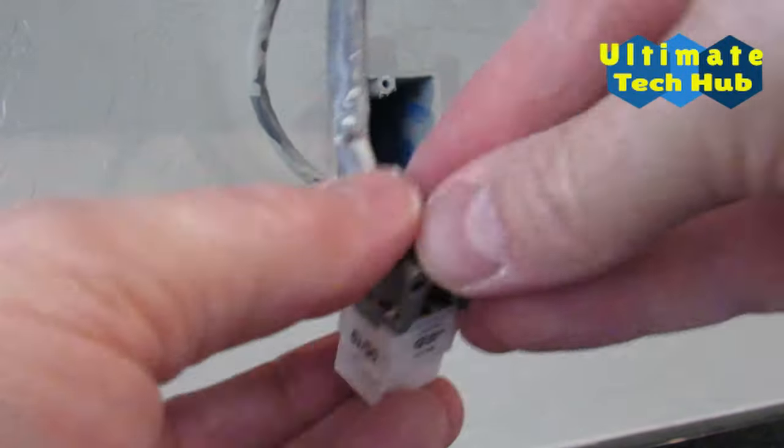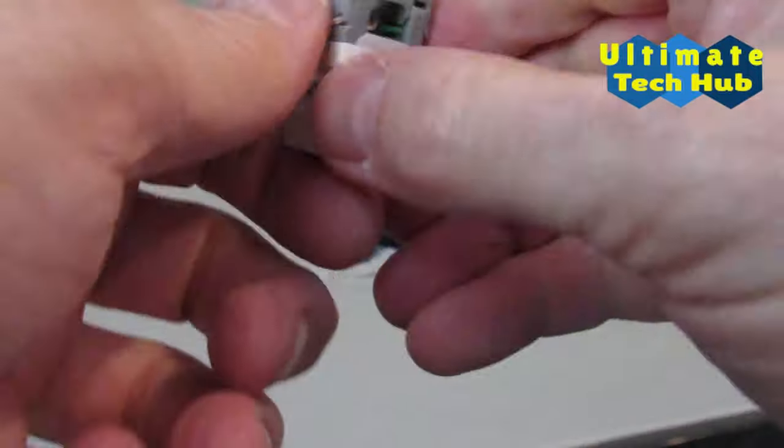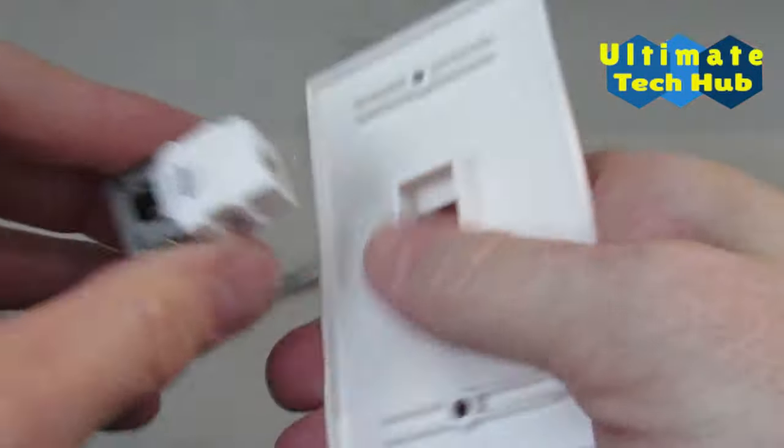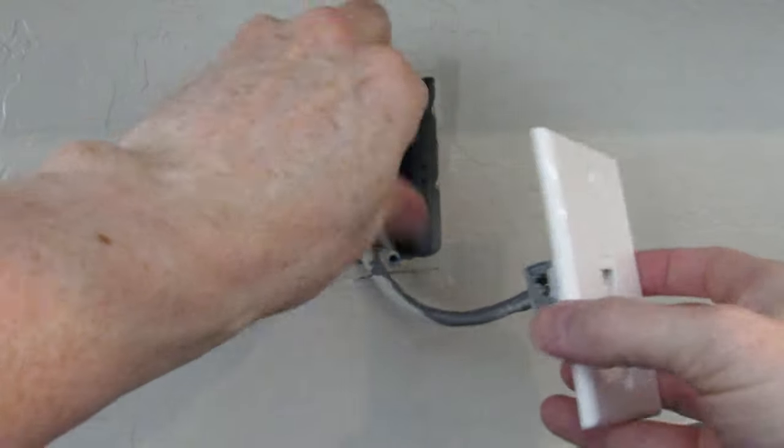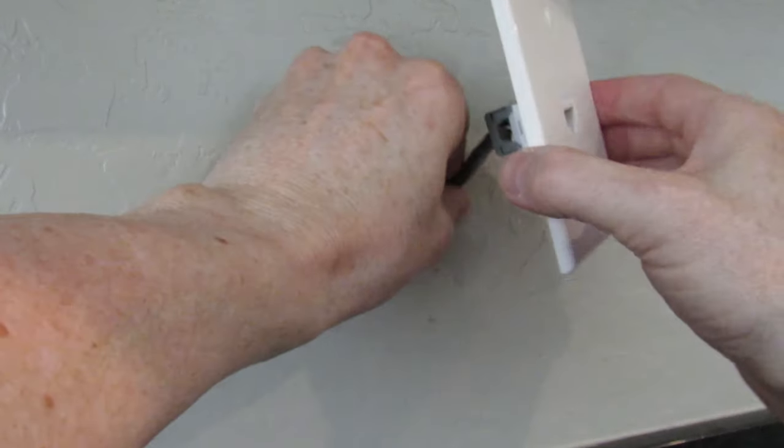Now put the cover on with a snap and insert it into the wall plate. That's it, you're done. Now just push it back in and then put the two screws in.